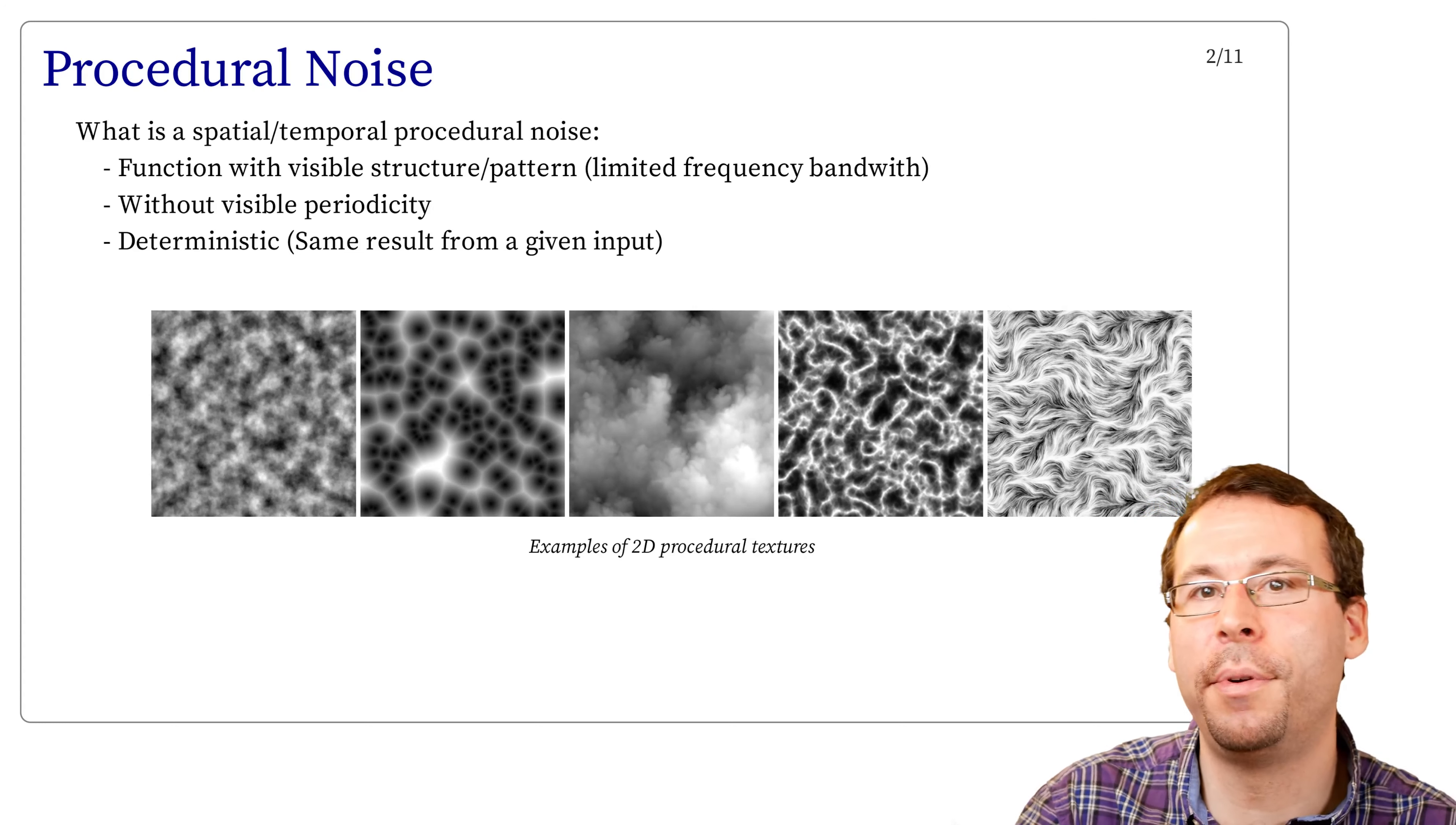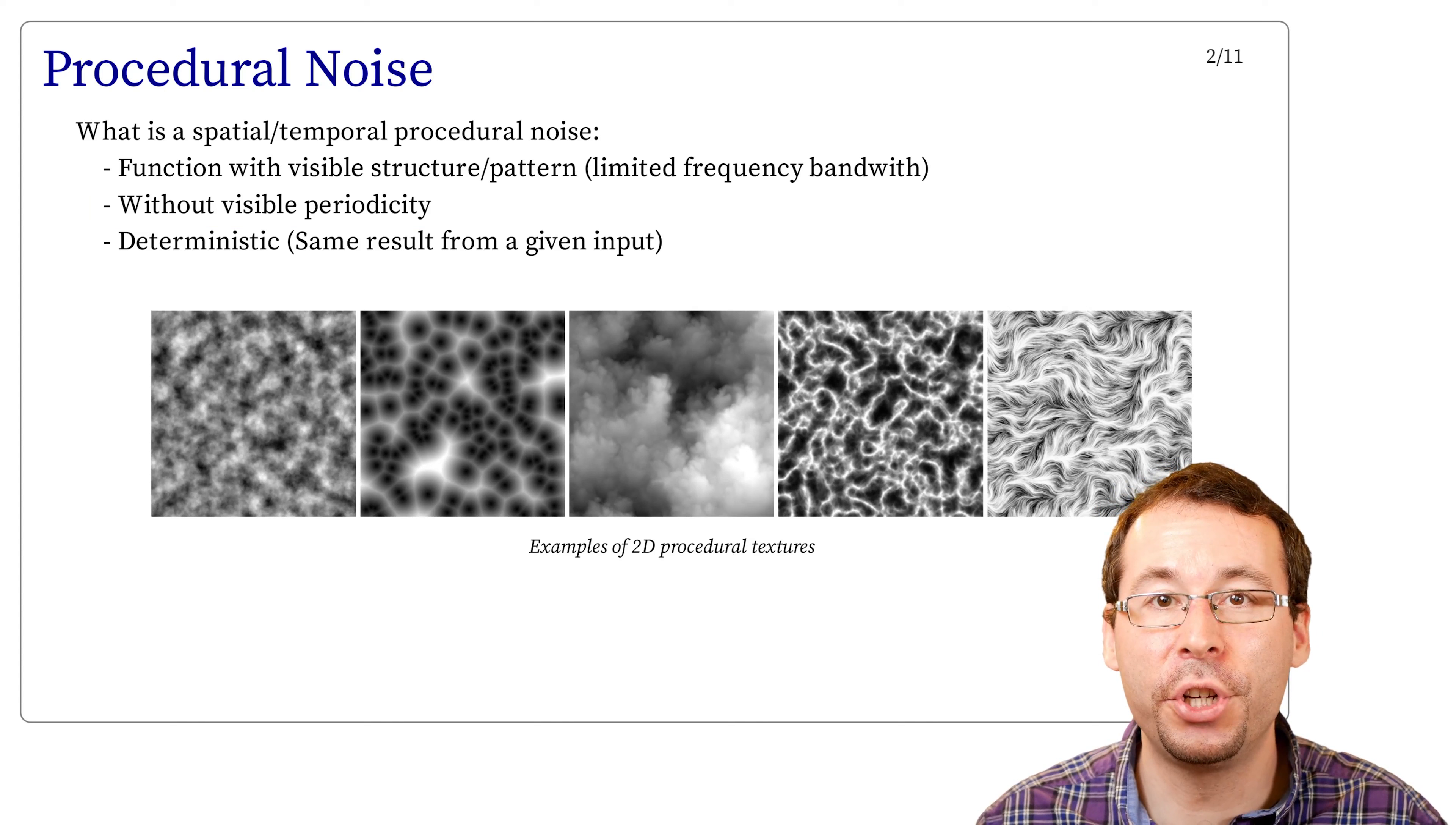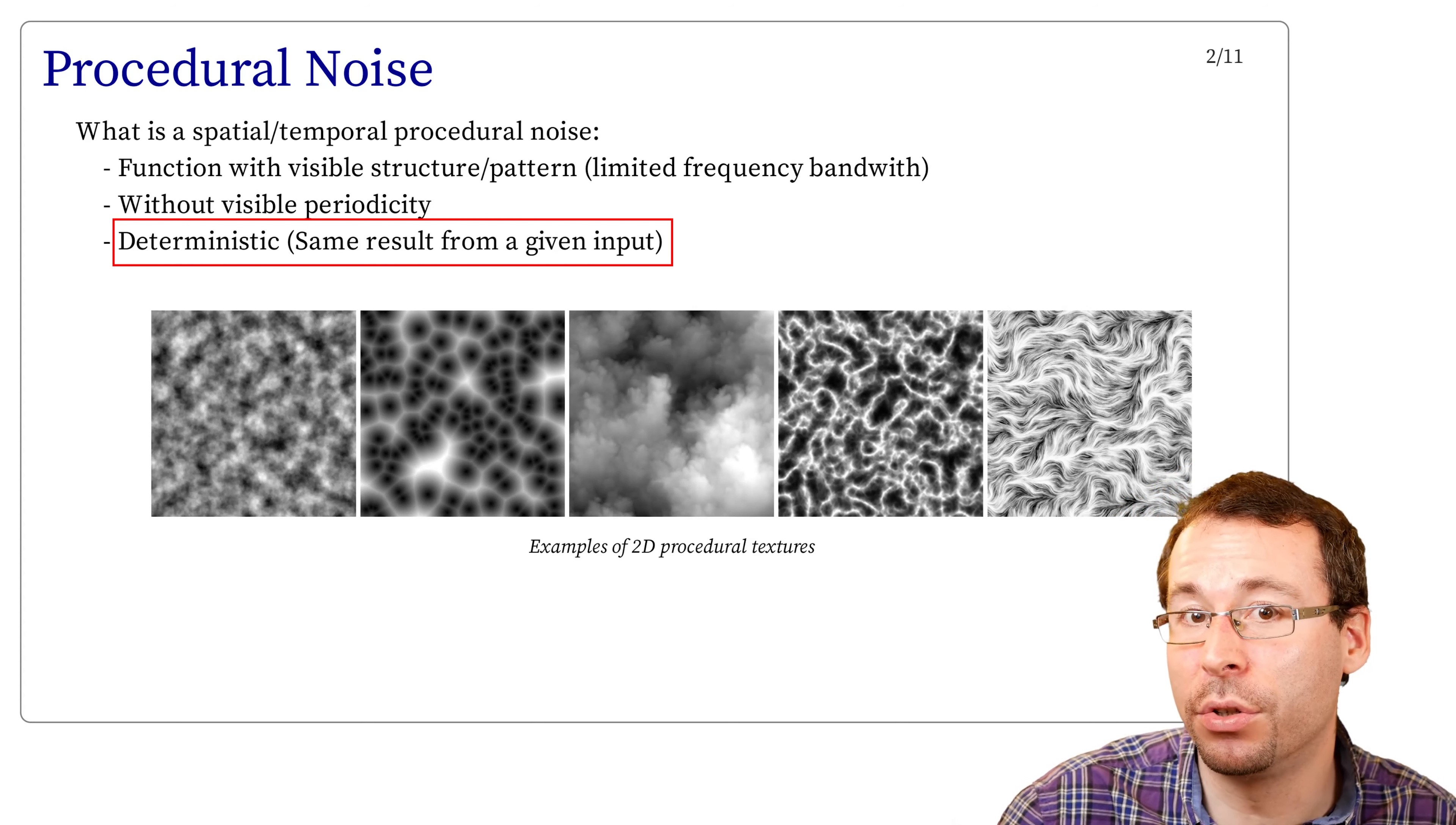Second, the structure of a procedural noise should not be periodic, or at least not a visible one. Otherwise, it would not look like a natural phenomenon. And third, this function should be deterministic, meaning that the function should always give the same output for the same input. Otherwise, you cannot reproduce and control your result.